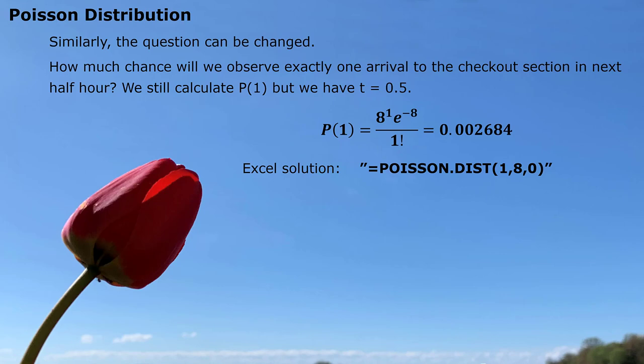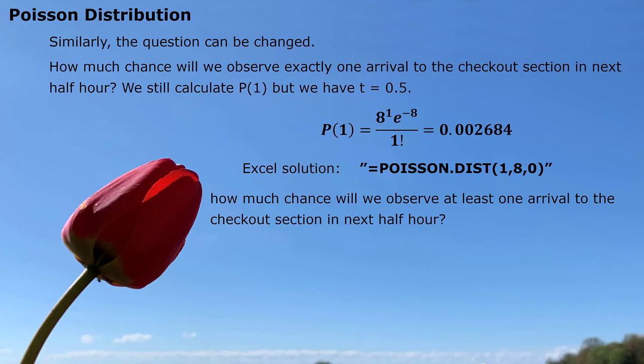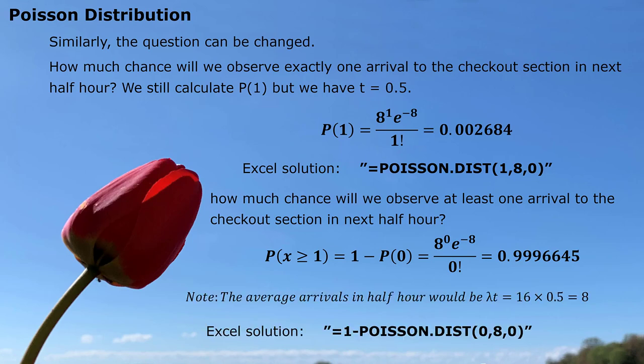If we continue to ask how much chance will we observe at least one arrival to the checkout section in next half hour, similar idea. We use one minus p zero. Pay attention to at least. At least is inclusive situation. You get the bottom line. Bottom line is one. Here is the Excel solution.